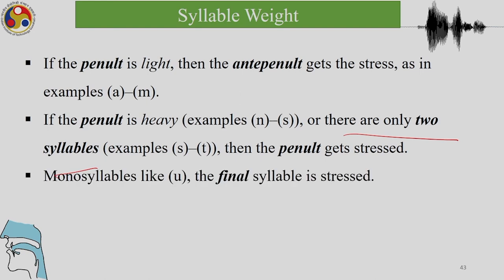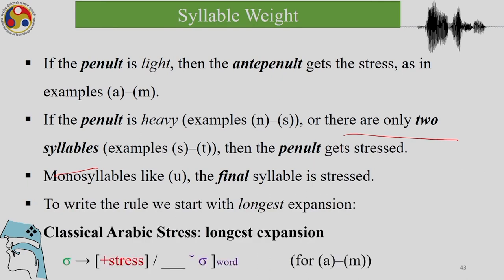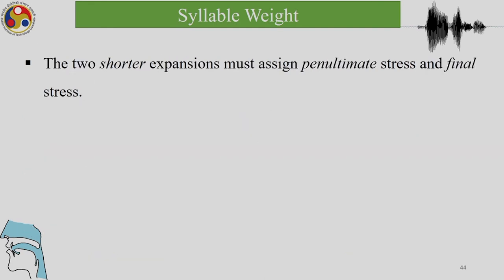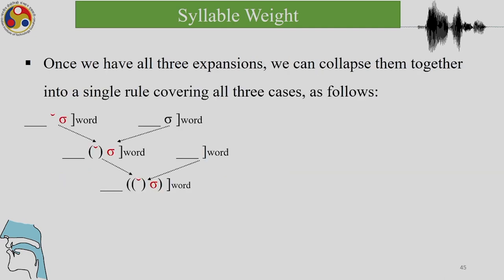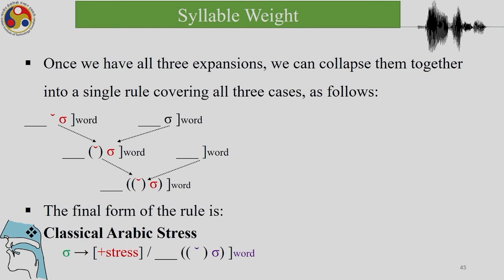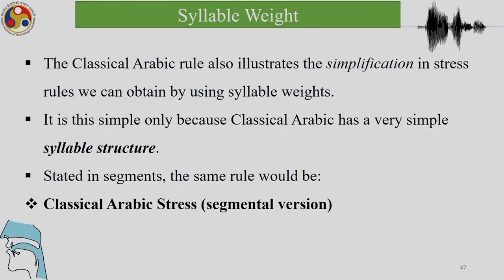To write the classical Arabic stress rules, we start with the longest expansion: the ante-penult gets stress if the penult is light. The shorter expansion assigns penultimate stress when the penult is heavy, and final stress for monosyllables. Once we have all three expansions, we can collapse them into a single rule covering all cases: if the penult is light, the ante-penult gets stress; if the penult is heavy, the penult gets stress.